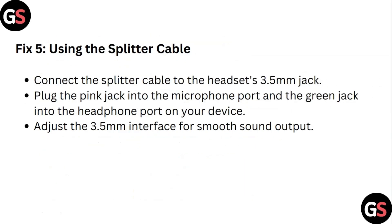Step 5: Using the Splitter Cable. Connect the splitter cable to the headset 3.5mm jack. Plug the pink jack into the microphone port and the green jack into the headphone port on your device. Adjust the 3.5mm interface for smooth sound output.